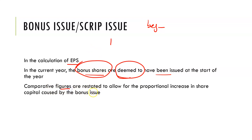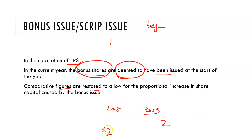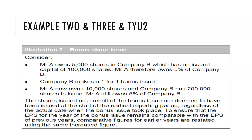Comparative figures are also restated. So if you have 2008 and 2009, and you multiply all the shares in 2009 by two, then to compare 2009 and 2008 you multiply all the shares in 2008 by two as well. Comparative figures are restated to allow for the proportional increase in share numbers.